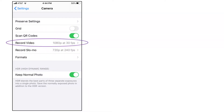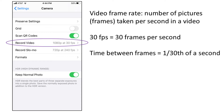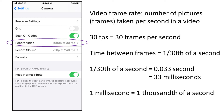Most smartphones let you adjust the frame rate. Here is a screenshot of my phone. I'm setting it up to the slowest frame rate, which is 30 frames per second, or 30 fps. That means every 1/30th of a second it takes a picture when shooting a video. 1/30th of a second is about 0.033 seconds, or 33 milliseconds. A millisecond is 1/1,000th of a second.